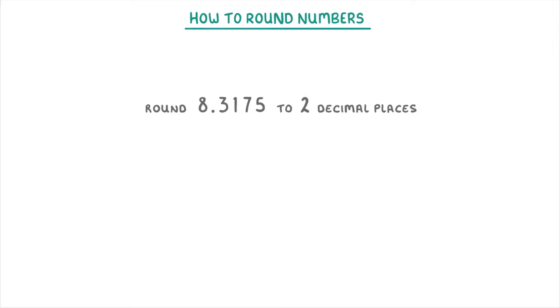Let's start with this question and round 8.3175 to two decimal places. Because we're being asked to round to two decimal places, we start by identifying the digit that has two places from the decimal point, which in this case is the 1. We call this one the last digit, because it's the last digit that we want to have in our answer.